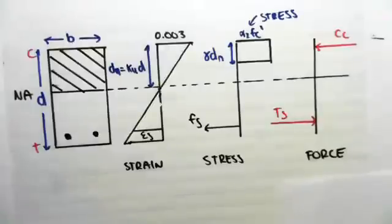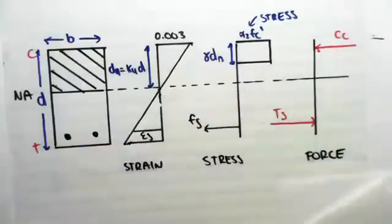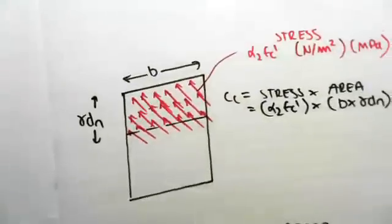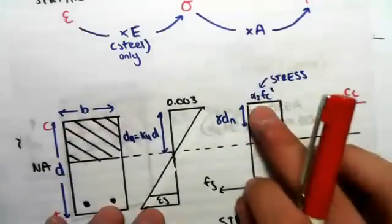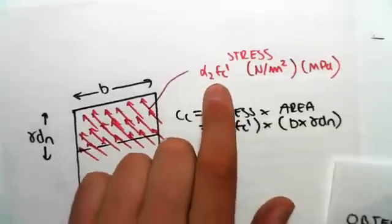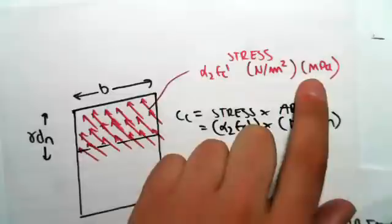Now, students tend to get a bit confused going from stress to force for the concrete. So let me show you a nice little picture which will help you out. So alpha 2 f_c dash is literally just the stress. It's going to be an MPa value. Alpha 2 f_c dash, which will be given to us in the code, how to find alpha 2. f_c dash will just be the strength of the concrete. So that's going to be MPa.